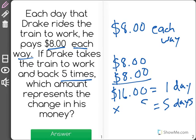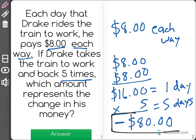So now what we have is $16 per day times five days for a total of $80. But what's important here is the amount is going to be a negative amount because we're talking about the change in his money. He has $80 less than when he started, so that means negative $80 represents the change in his money.